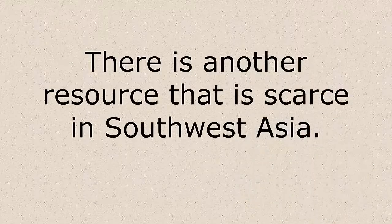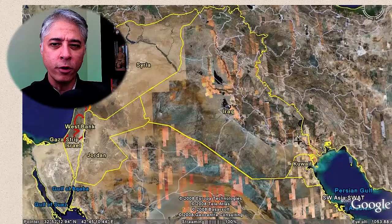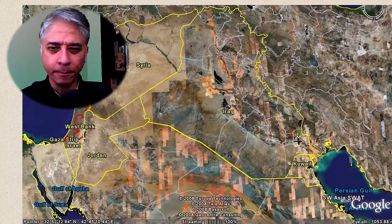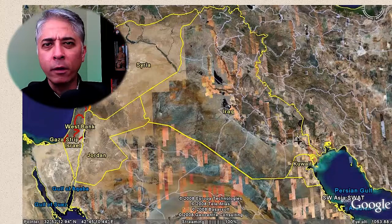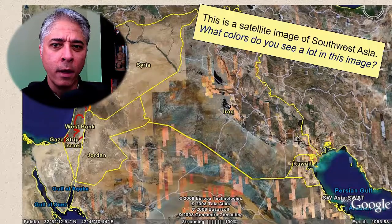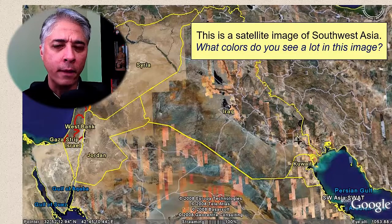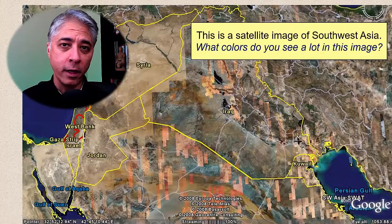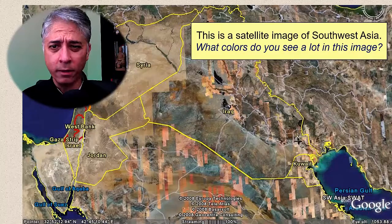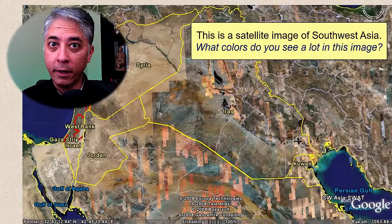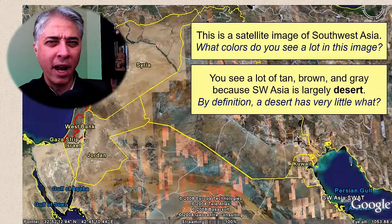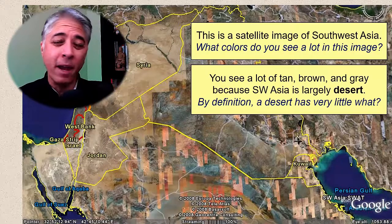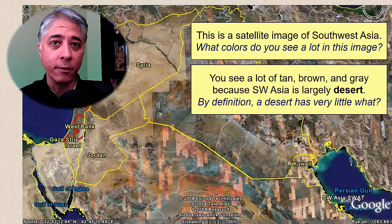There's another resource that is scarce in Southwest Asia. Let me show you some satellite imagery. I want you to pay attention in particular to the colors that we see in this satellite image of Southwest Asia, also known as the Middle East. What colors do you see a lot of here? We see a lot of tans, browns, and grays because a large amount of Southwest Asia is in fact desert.